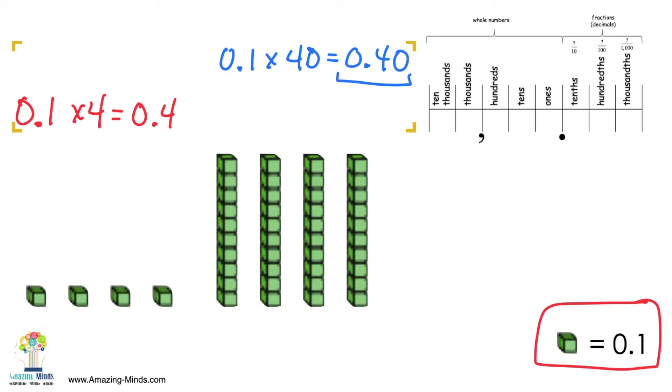But we know that that's not right. Because 40 hundredths is actually equal to 4 tenths. That doesn't work. And you can look at the picture and see it doesn't work.